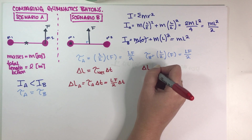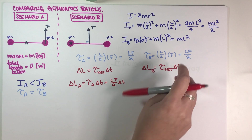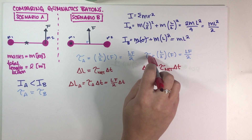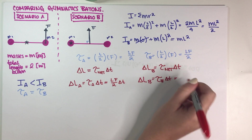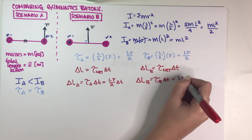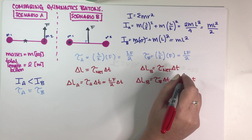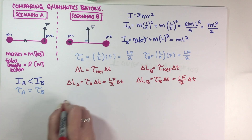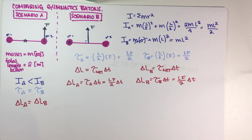For scenario B, delta L_B equals the net torque times delta T. There's only one force, so the net torque is just that one torque, giving LF times delta T. Wait — the instructions state that delta T is exactly the same for both, and since both torques are equal (LF/2), that means delta L_A is exactly the same as delta L_B. That solves the third part of the problem.